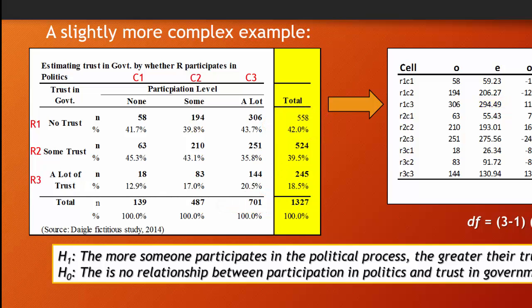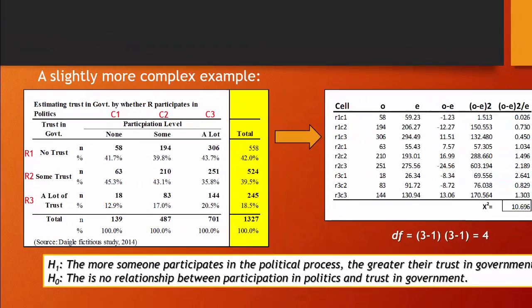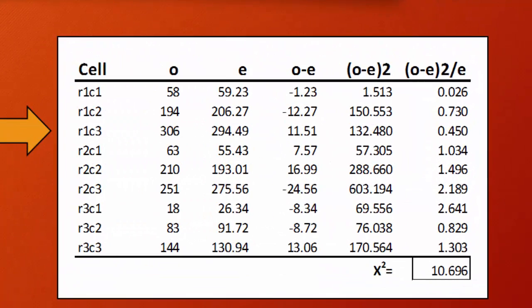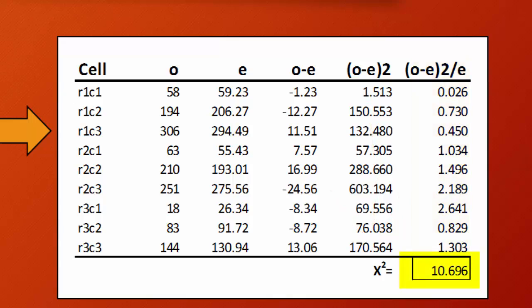We continue the same process for R2 and R3. R2C1 gives expected cell counts of 55.43, and so on all the way to R3C3. When you add up all of the observed minus expected, squared, divided by expected values, you get the relative weight for each cell contributing to the chi-square calculation. Summing that final column gives a chi-square statistic of 10.696.